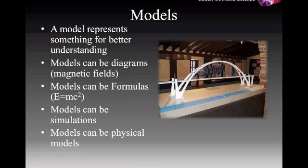Modeling is a way of simplifying what's happening to just see the effects that we want to look at, and there's many different types of models. You can model something via a diagram. Magnetic fields are a really good example of this. Formulas are actually mathematical models, E equals MC squared for example. Models can also be simulations. They can be computer programs that react the way that you would expect them to act, and they can be physical models. Models of atoms, or in this case, a model of a bridge.